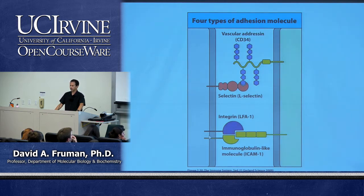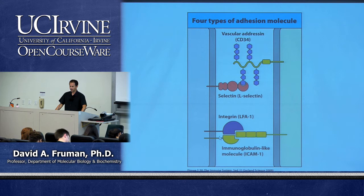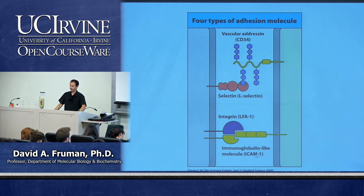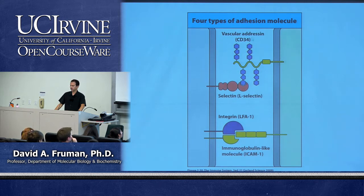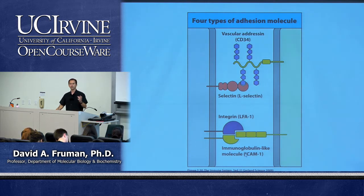The second two classes are integrins and Ig-like molecules. Integrins are widely distributed throughout the body, made up of alpha and beta chains, and their ligands are often members of the immunoglobulin superfamily, or Ig superfamily. The integrin we'll talk about in today's lecture is called LFA1, which has two chains, and the immunoglobulin-like molecule it binds to is called ICAM1. These are called Ig-like because they have domains that resemble domains of antibodies.